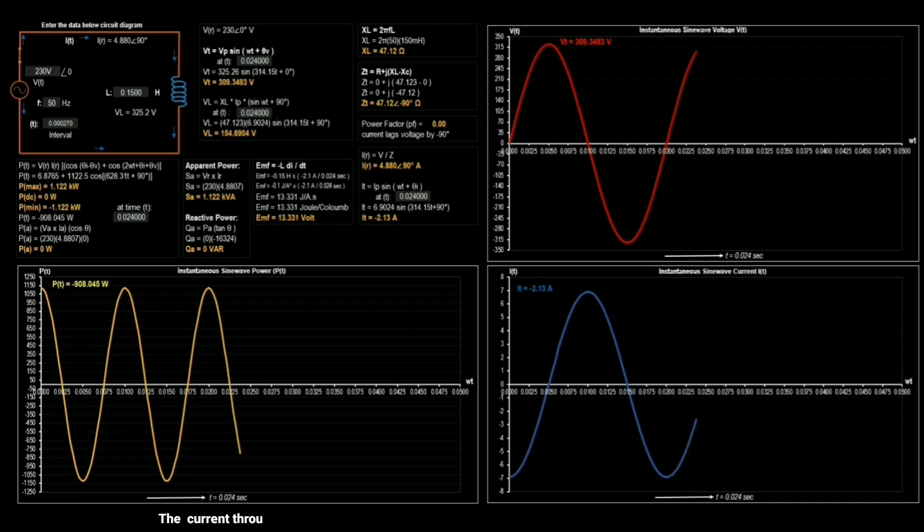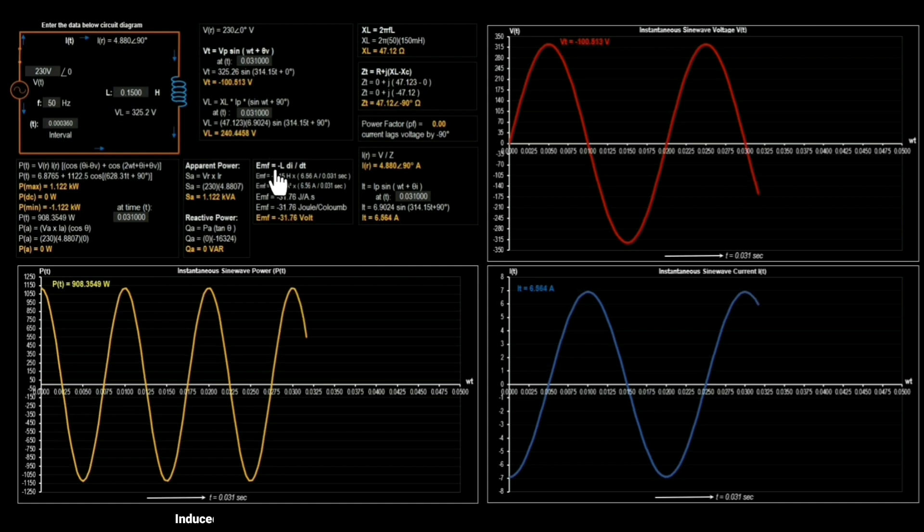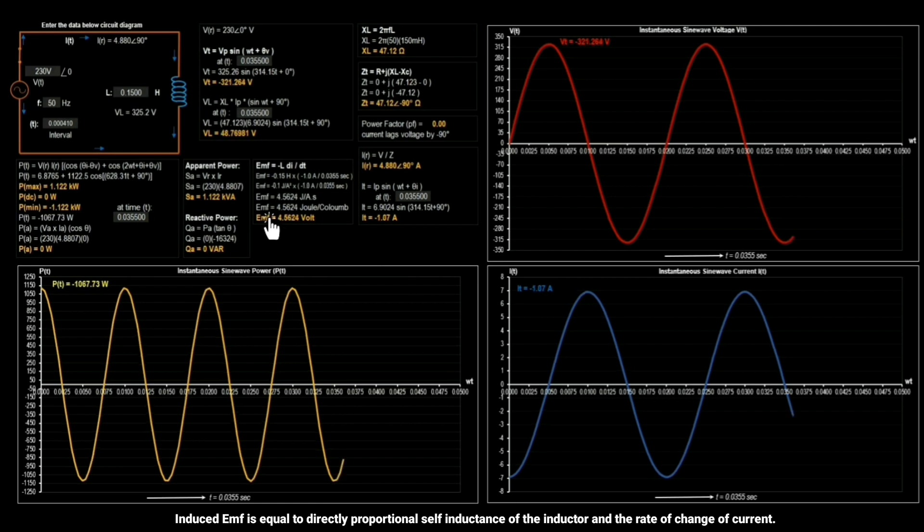The current through the inductor varies and opposing induced electromagnetic field is generated and given by this equation: induced electromagnetic field is equal to directly proportional self-inductance of the inductor and the rate of change of current.